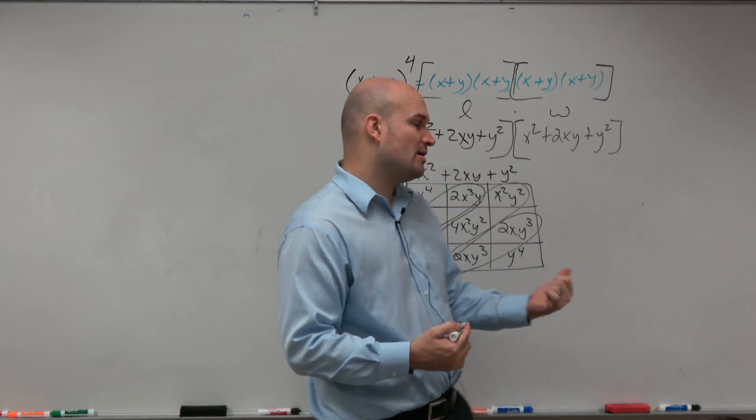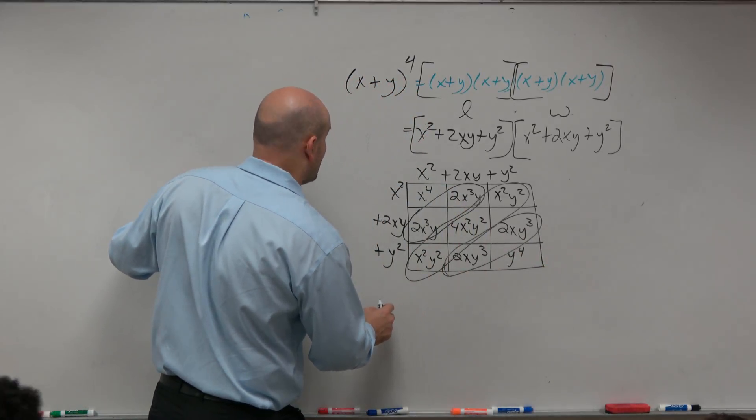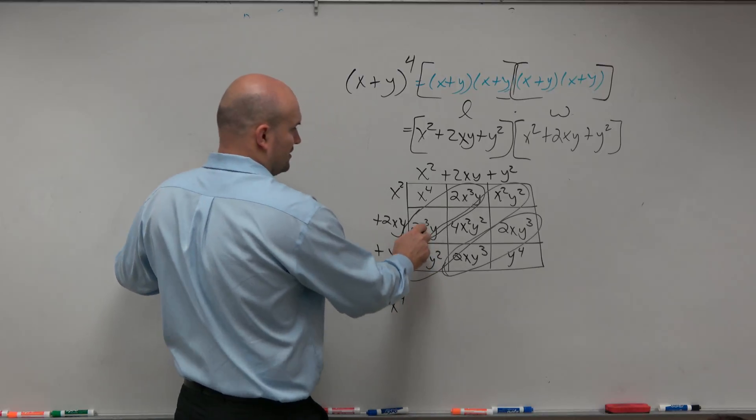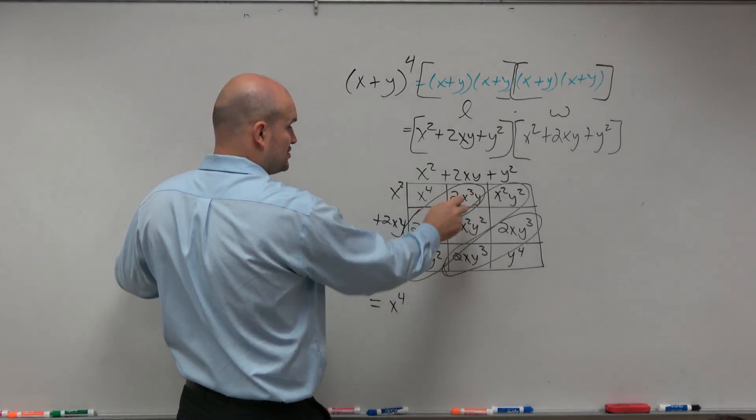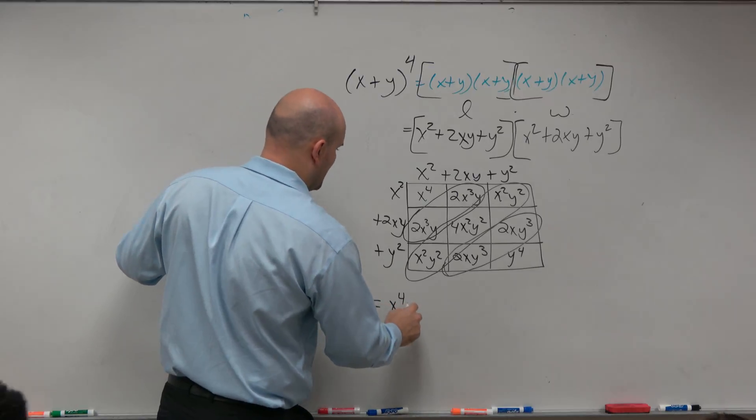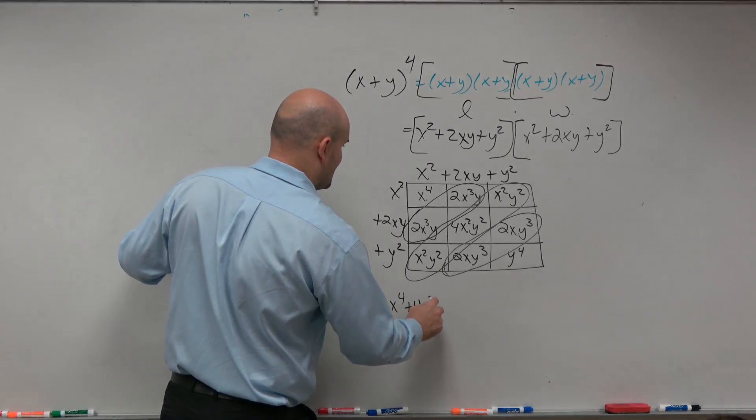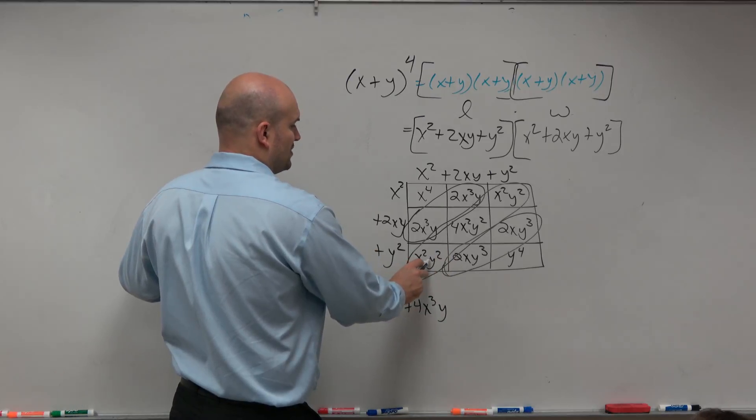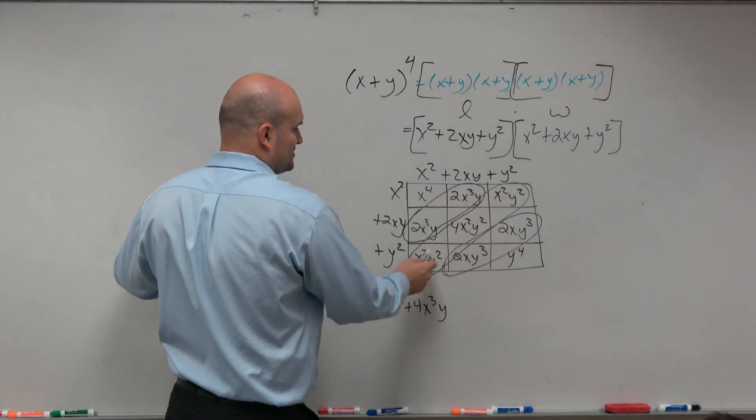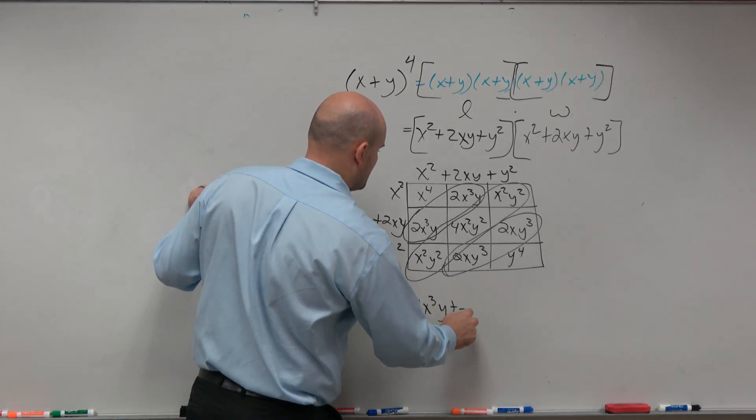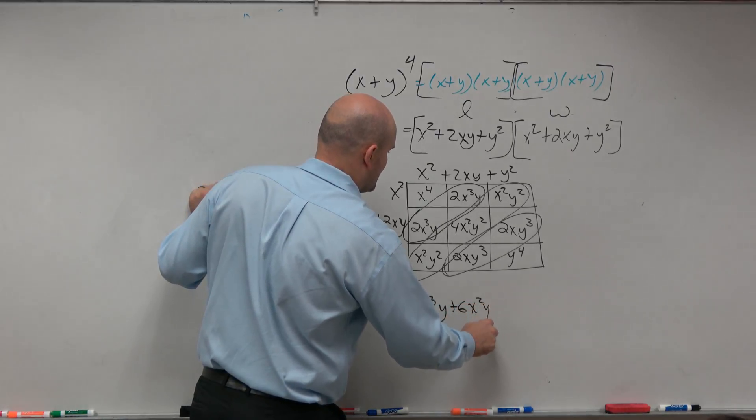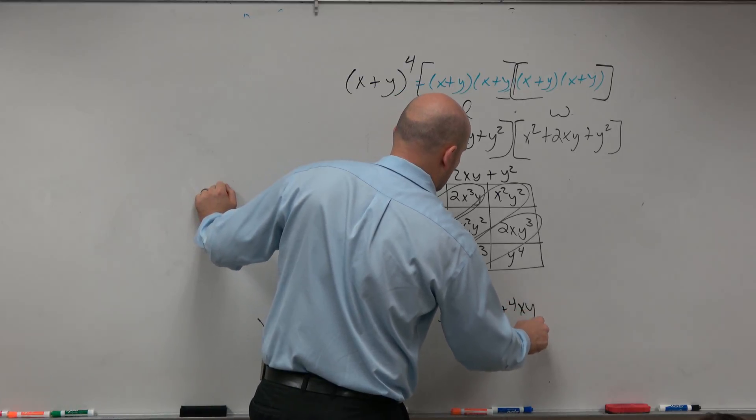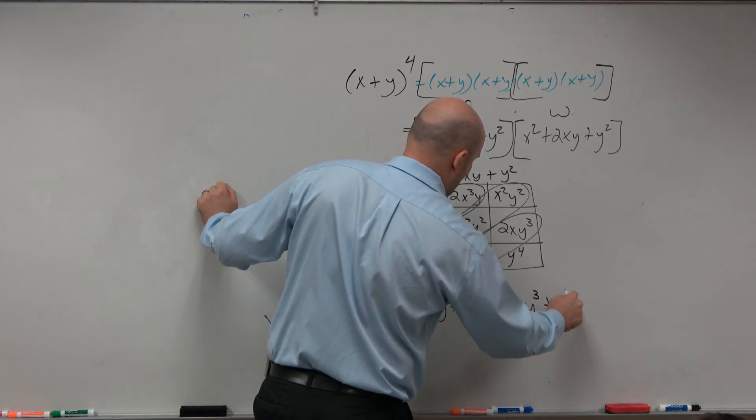That helps because now if I want to write this in descending order, I would say that the expanded form here is x to the fourth. 2x cubed y plus 2x cubed y is going to be 4x cubed y. Here I have x squared y squared. These are all like terms, so it's 1, 4, and 1. So it's 6x squared y squared. Here I have plus 4xy cubed plus y to the fourth.